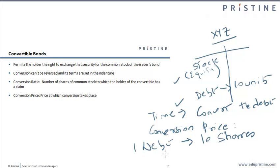So, if he has 10 units of debt, he gets 100 shares.